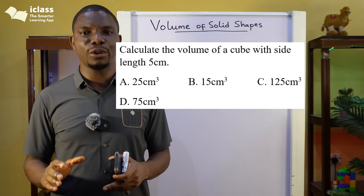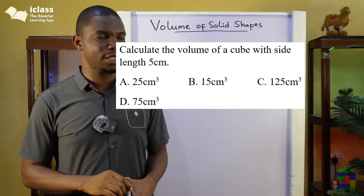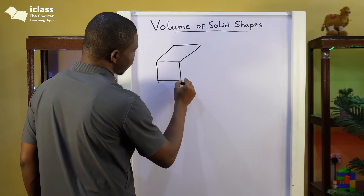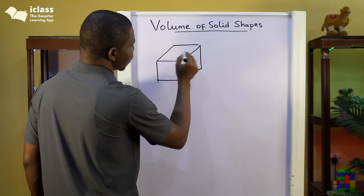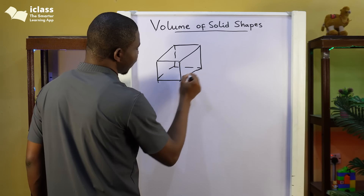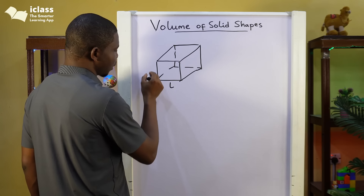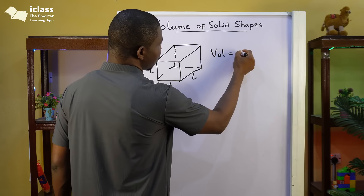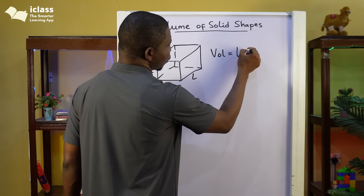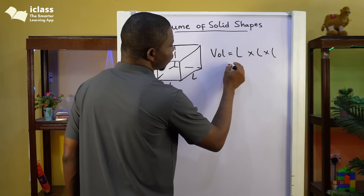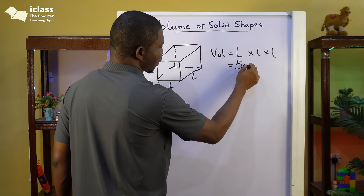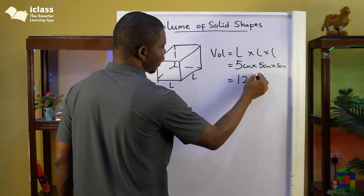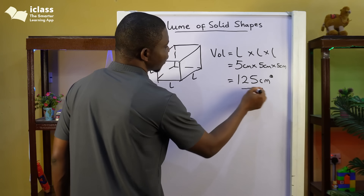Next question: calculate the volume of a cube with side length 5 centimetres. A cube is just like a cuboid except all sides are equal — the length, breadth, and height are all the same. So the volume would be L times L times L, which is L cubed. Since the side length is 5 centimetres, we have 5 times 5 times 5, which gives us 125 centimetres cubed.